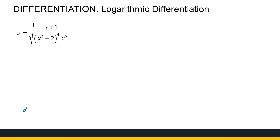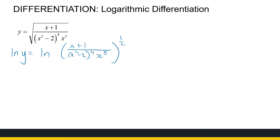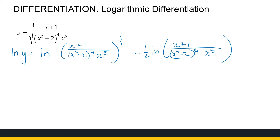This next example goes a little further — I have the square root of a function, which means that function raised to the power of one half. So ln(y) equals ln of [(x + 1) divided by (x² − 2)⁴ times x⁵], all to the power of one half. Applying logarithmic laws, that becomes one half times ln of [(x + 1) over (x² − 2)⁴ times x⁵].